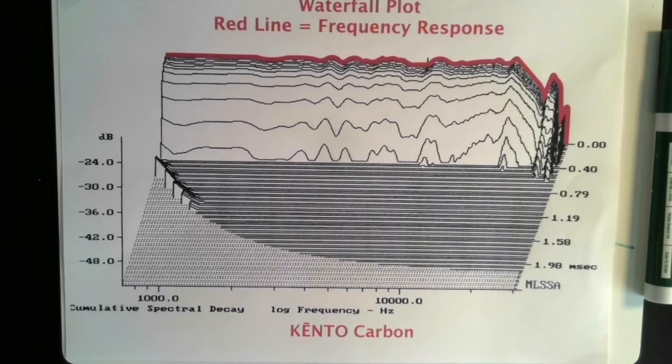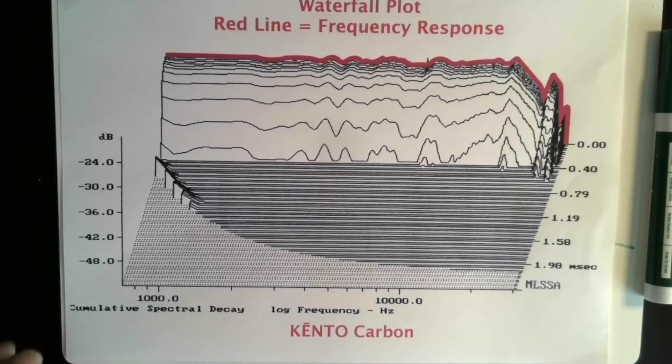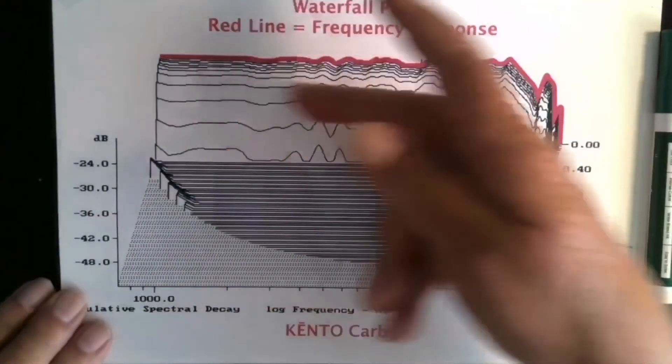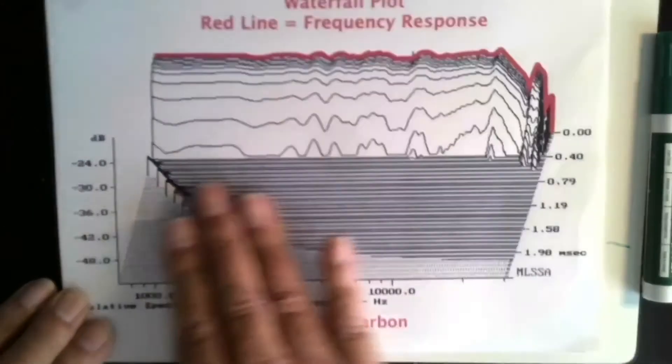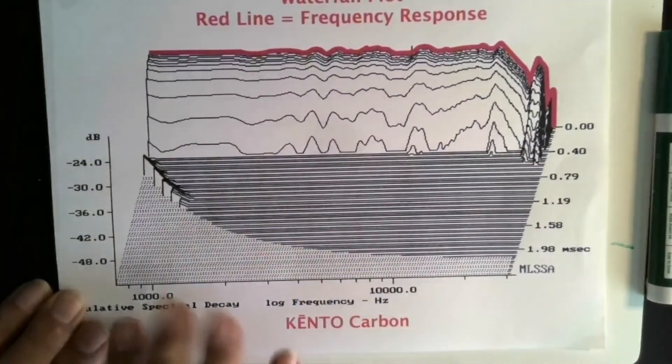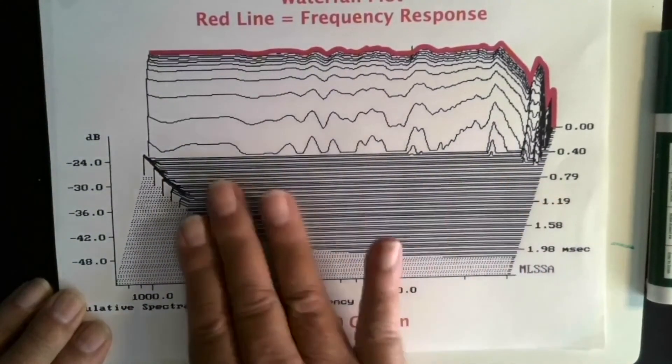And also of course ringing or sounds, that energy that is coming from the cones themselves that gives them the color of their sound. So this here is the Kinto. As you can see it dies off quite uniformly and dies off very quickly to where this is 24dB here. Everything that's below 24dB disappears into the noise of the floor of the test.